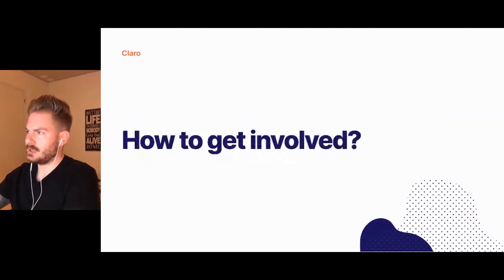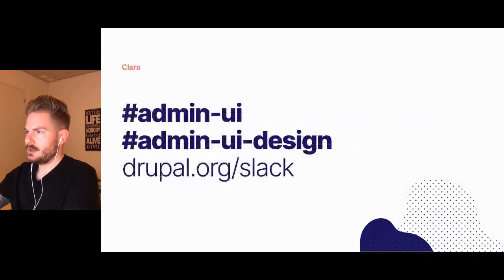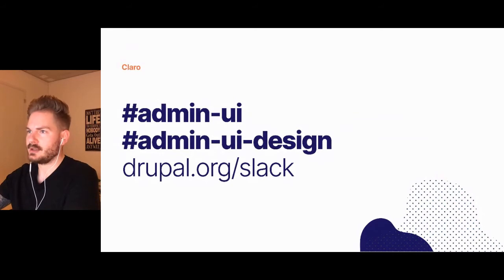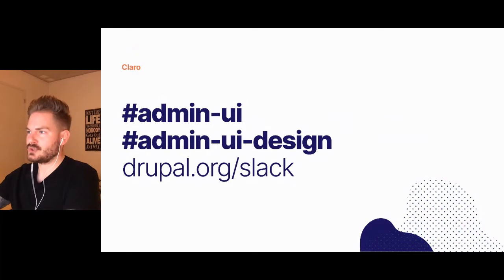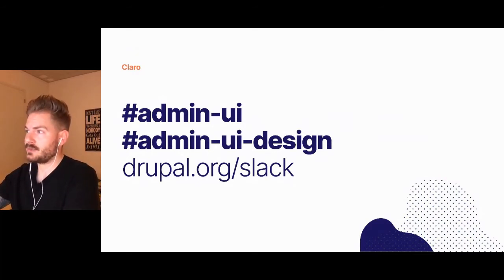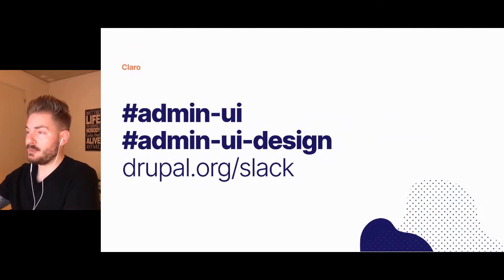How can you get involved? The easiest thing to do is go to drupal.org/slack. There's a Drupal Slack group with two channels: 'admin-ui' and 'admin-ui-design.' The first one is for general contribution — front end, everything which goes into contribution. The second is more focused for designers. If there are any designers listening who want to help, join that channel — that's basically where all the design happens. Everybody else is also welcome to join, of course.